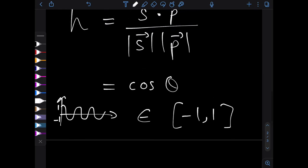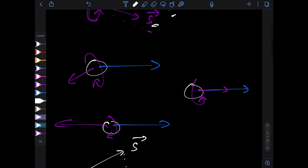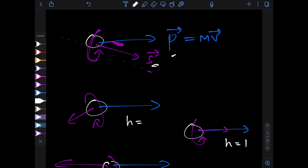So yeah, helicity is a number that lies between negative one and one. When helicity is one, the two vectors are perfectly aligned. When helicity is negative one, they're perfectly anti-aligned. And there are any number in between here for these two other cases.